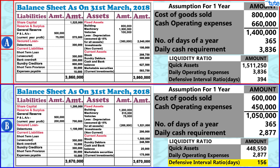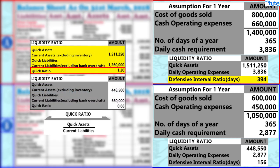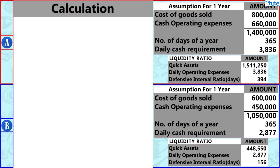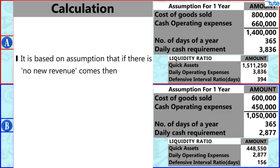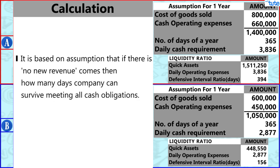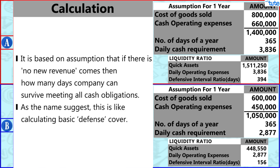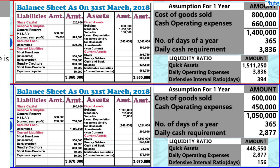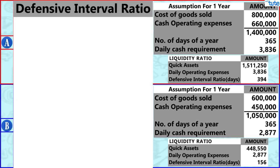We can notice that a company will have more defensive power if its asset test ratio is better. This calculation is based on the assumption that if no new revenue comes in, how many days can the company survive meeting all cash obligations? As the name suggests, this is like calculating a basic defense cover.